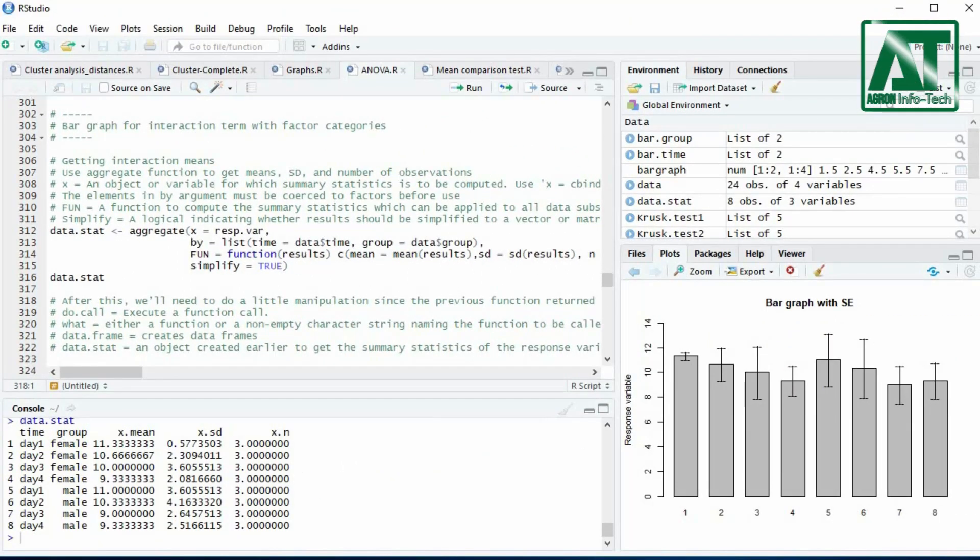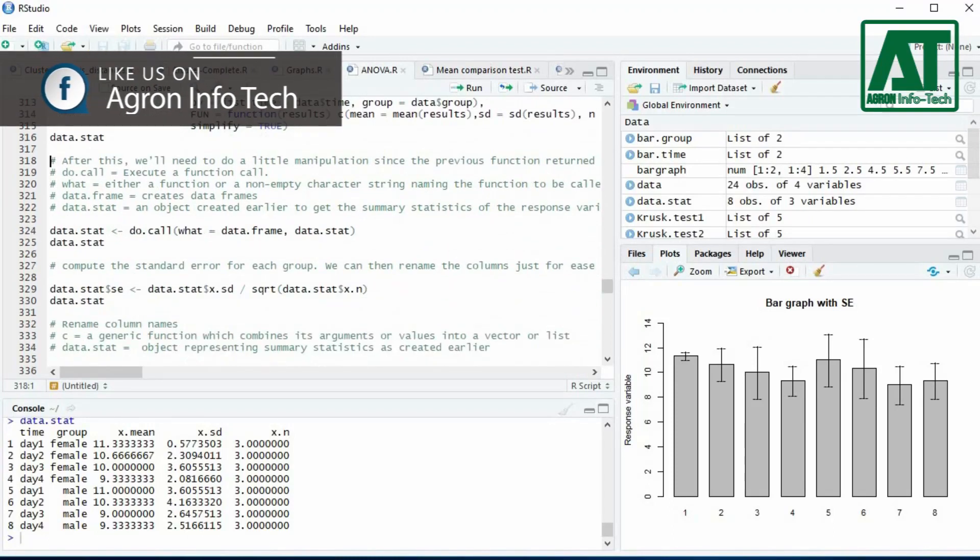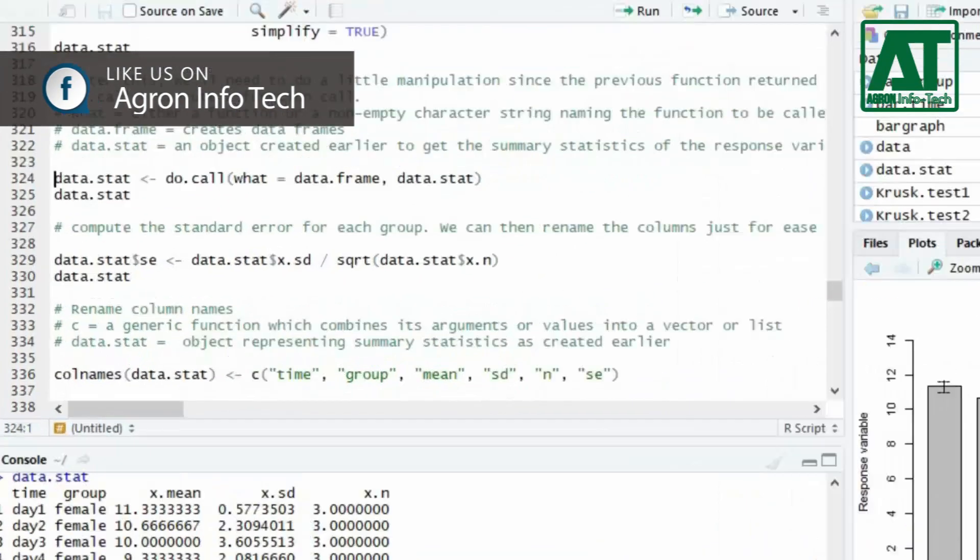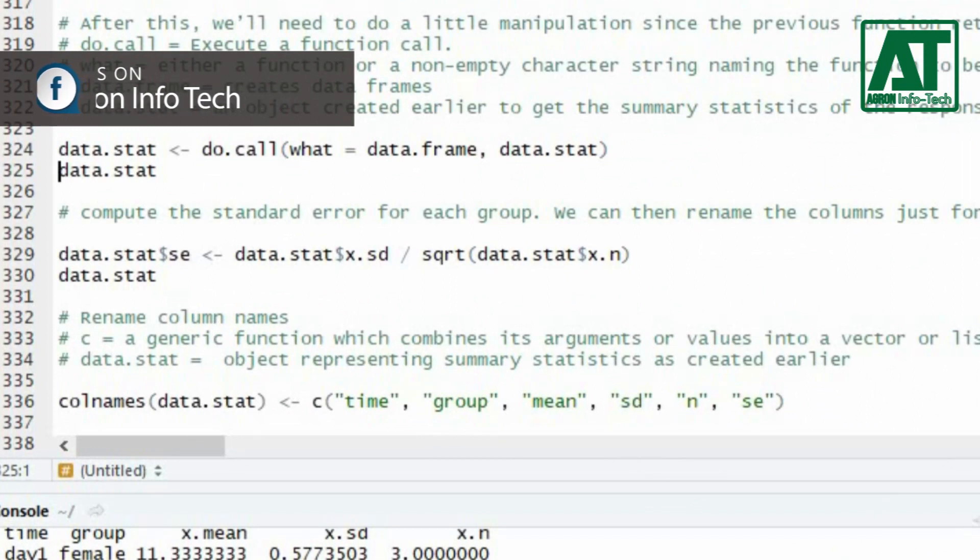As summary statistics represent the aggregate function returned matrices instead of vector, use do.call function to execute a function call. For what argument use data.frame function to create data frames. Data.stat represents an object created earlier for summary statistics of response variable.